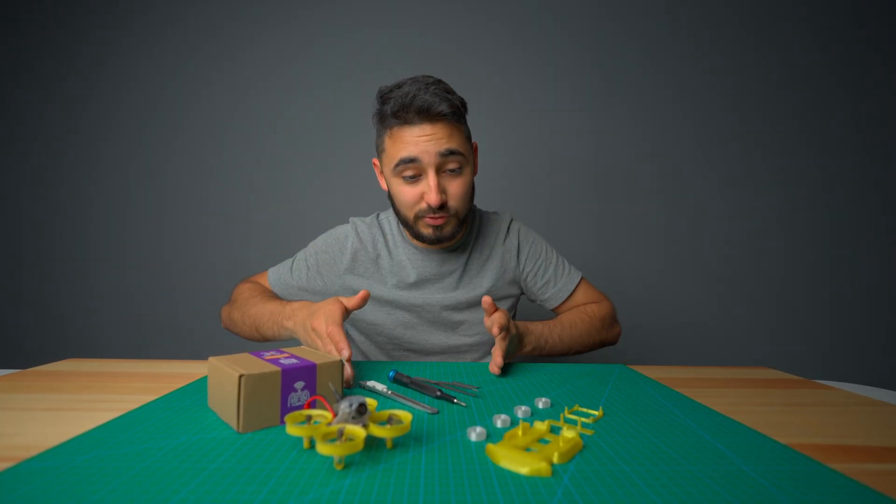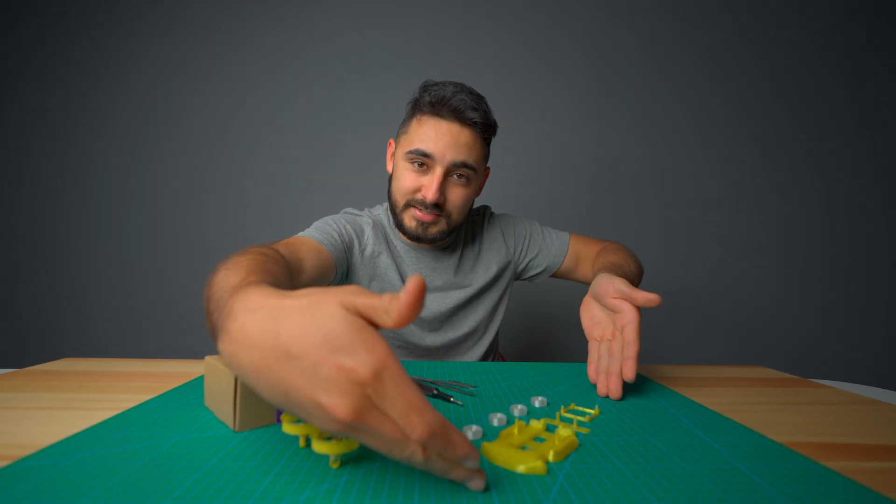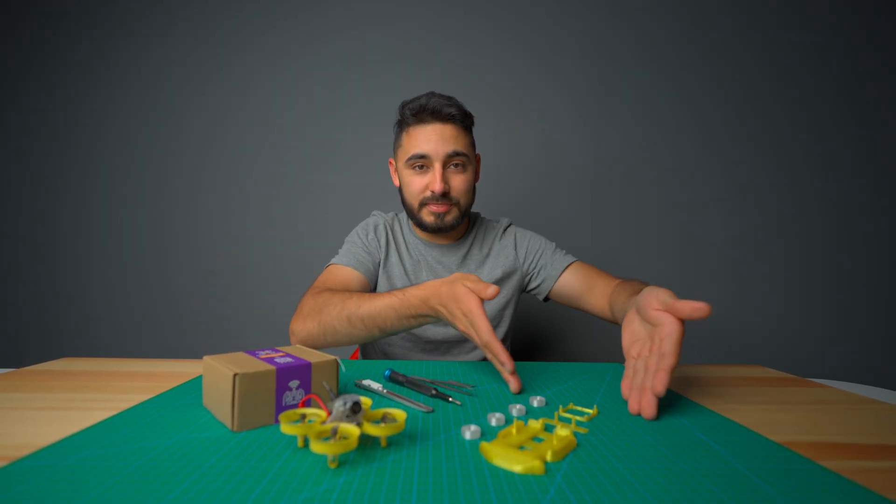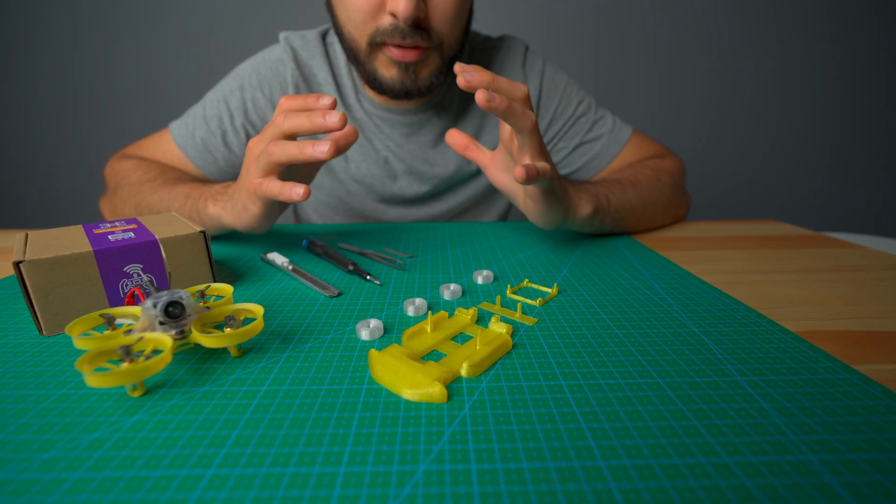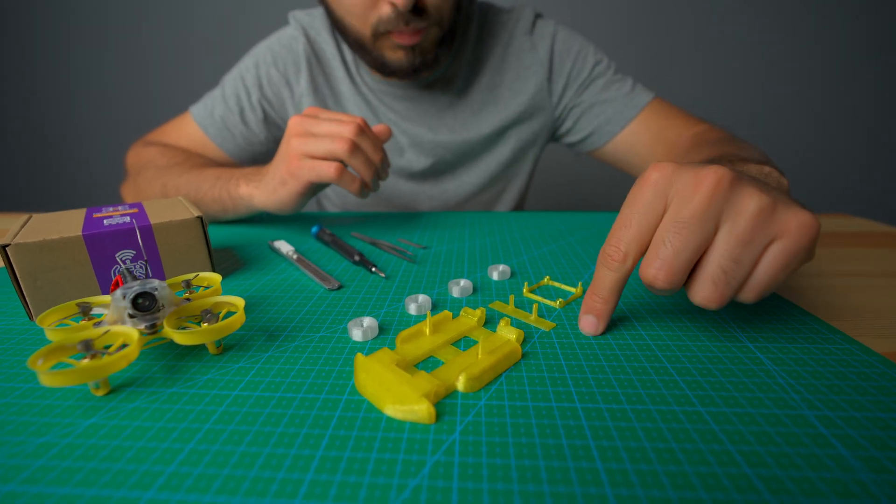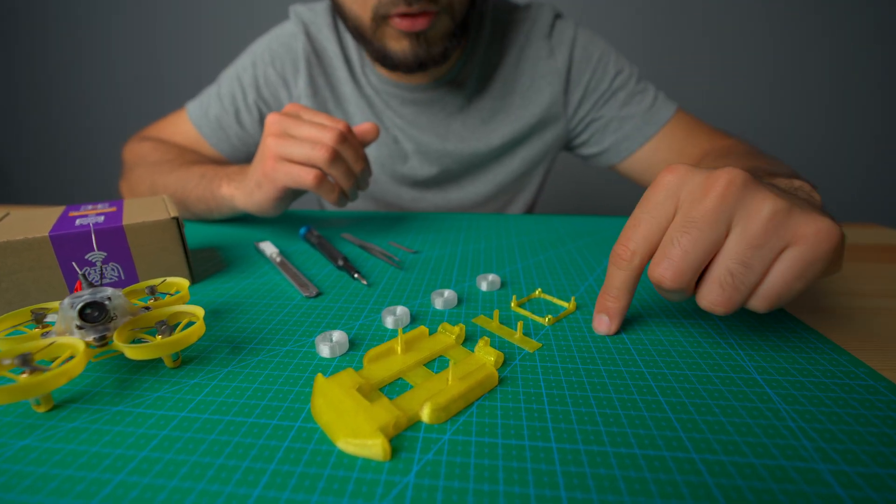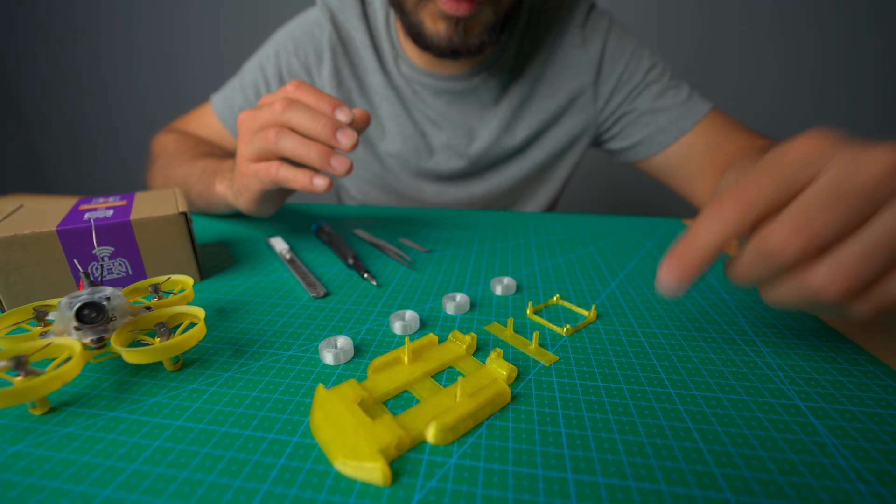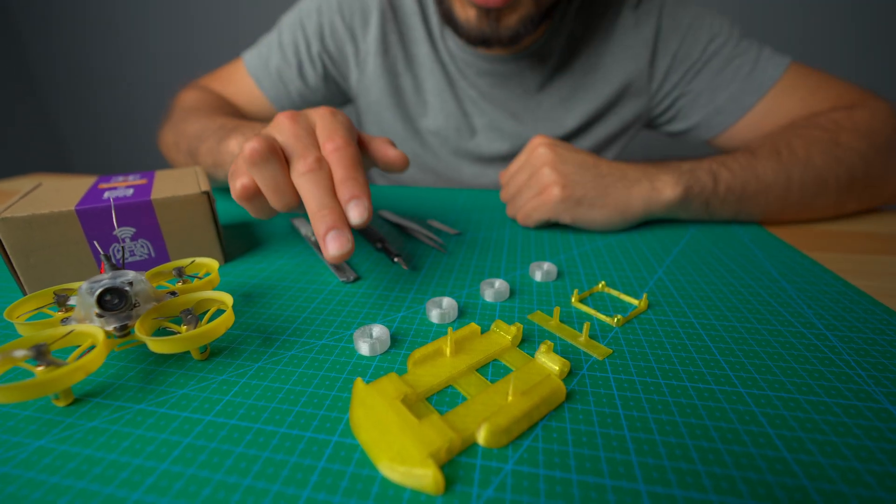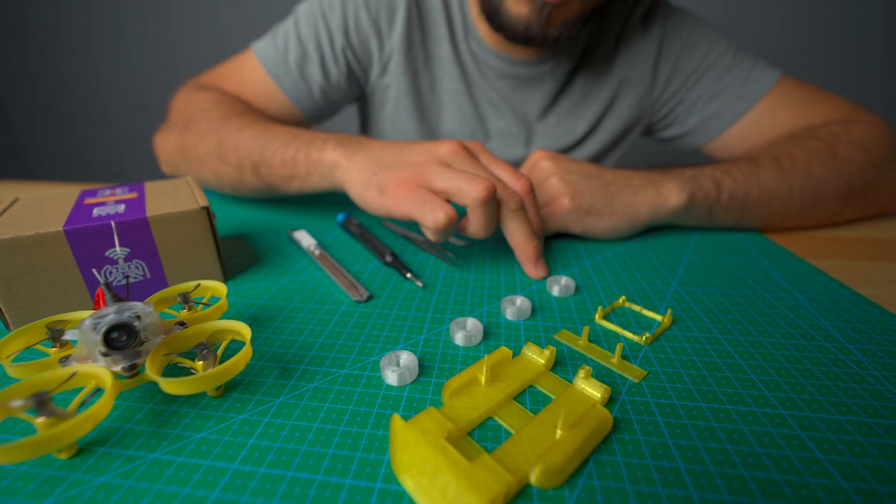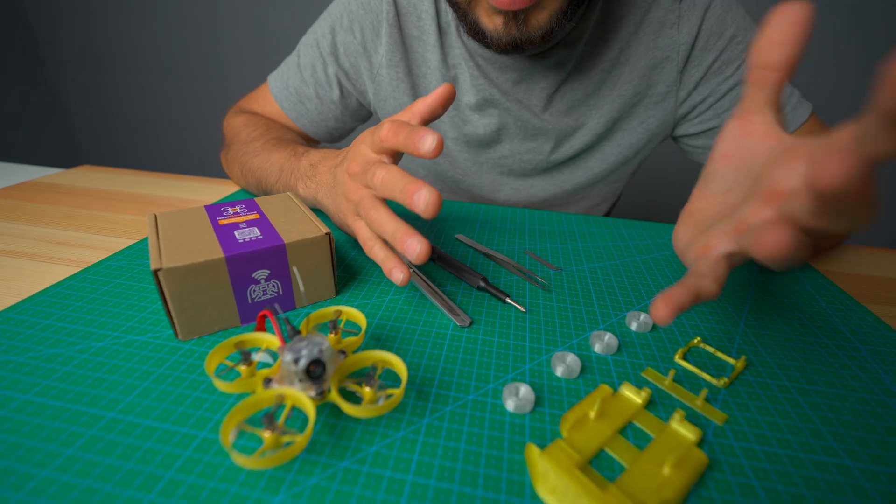Another thing you're going to need is tools and the STL file to print the B-Cart. Another thing that we recommend is that you print the body, the spoiler, and the flight controller holder in PETG with 10% infill. And the tires in TPU with 5% infill. And obviously, you're going to need tools.